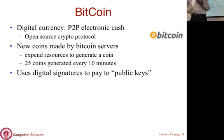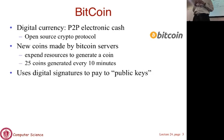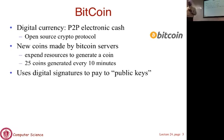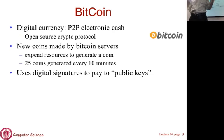Bitcoin is a virtual currency not associated with any country or organization. It's a p2p system with servers called Bitcoin servers that generate coins at a certain rate — 25 coins every 10 minutes — to control the rate of money supply. These servers have to run a computationally intensive algorithm to generate a coin, which prevents anyone from trivially spinning up a server and flooding the system with coins.